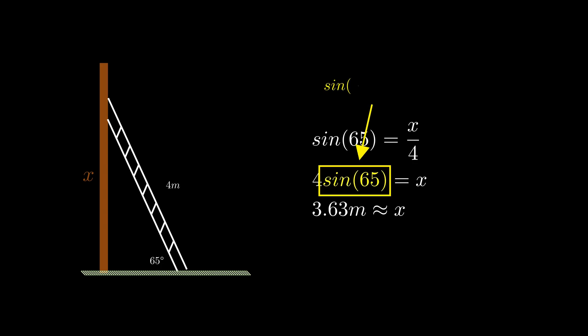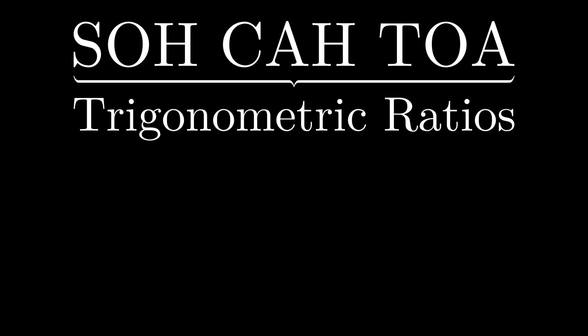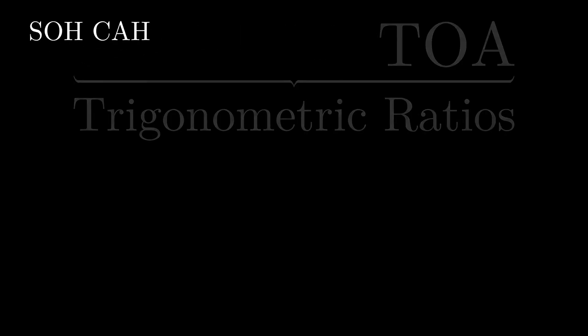What even is sine of 65? You could just put this on the calculator, and you get it's about 0.91. So then, how does sine of 65, or 0.91, tell me that the ladder goes 3.63m up the wall? To answer this question, it helps to think of SOHCAHTOA as trigonometric ratios, as in, the side lengths are just some ratio of the other. Let's just focus on sine and cos for now.